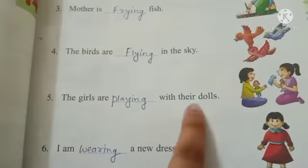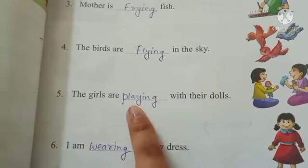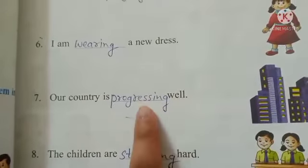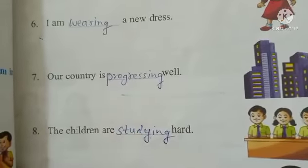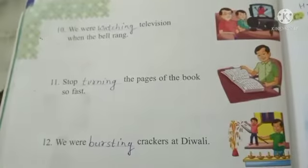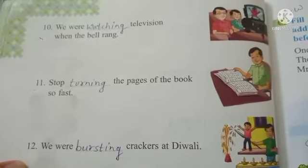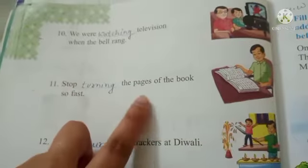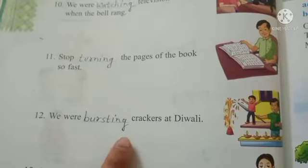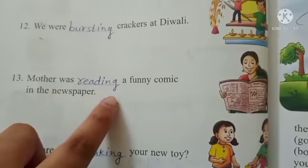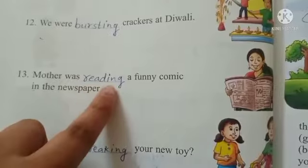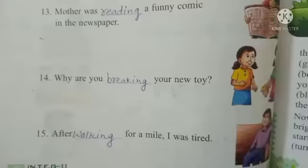The girls are playing with their dolls. I am wearing a new dress. Our country is progressing well — that means our country is progressing now. The children are studying hard — study, studying. And we are watching television when the bell rang. Stop turning the pages of the book so fast — turning. We were bursting crackers at Diwali — bursting.